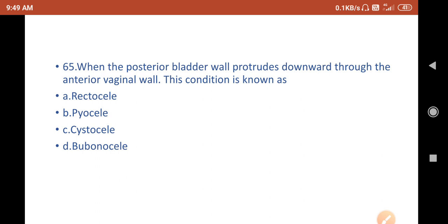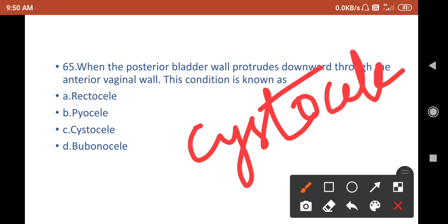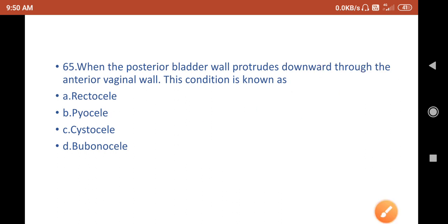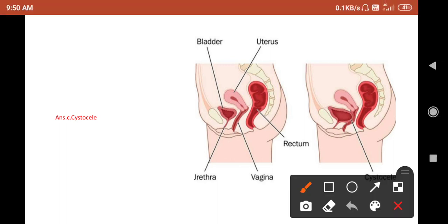Let's see the answer. I already said you, it is cystocele. Here you can see the condition: this bladder is falling over the vagina. The posterior wall of bladder is protruding to vaginal wall, so this condition is called cystocele.